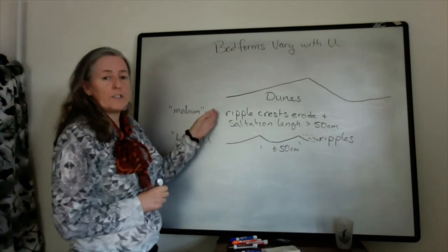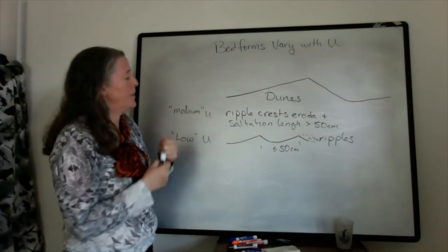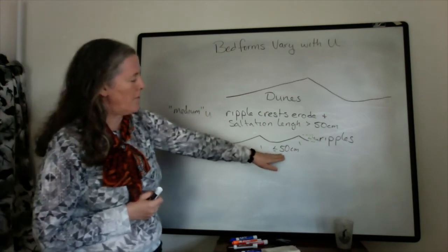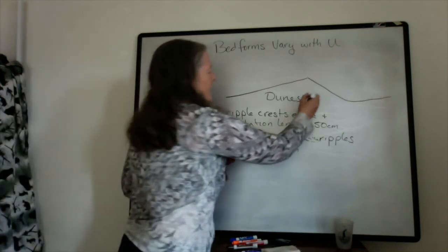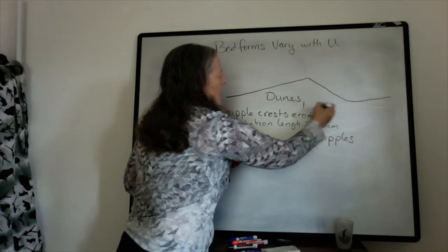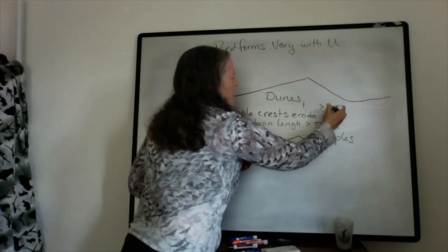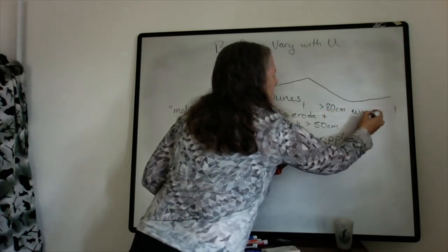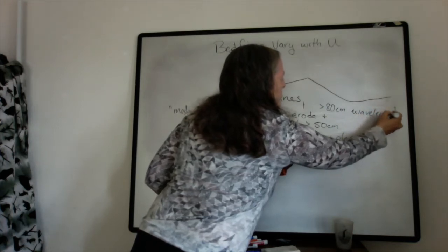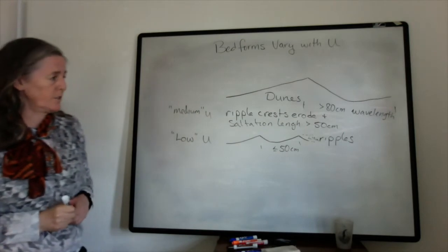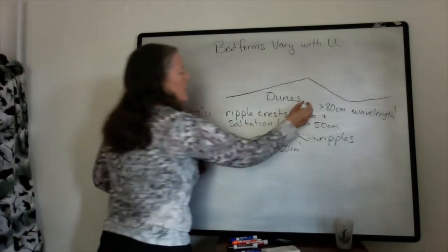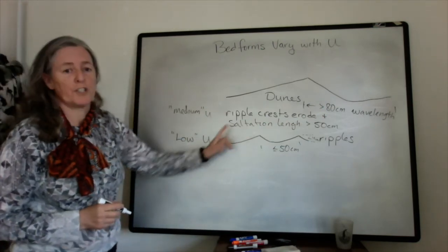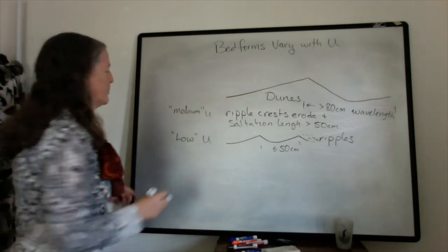So one of the interesting things is because of the interaction of the sediment and the fluid dynamics, there's not a gradation in size between these. Ripples have a maximum of 50 centimeters for the wavelength. But dunes have a minimum of about 80 centimeters in wavelength. And they can actually be meters or even tens of meters in some cases. So there's a distinct jump in size when the ripples start washing out because the flow speed gets too high and you form dunes.